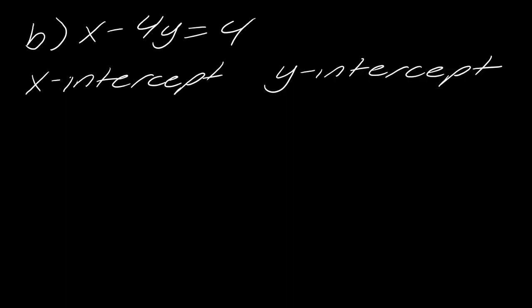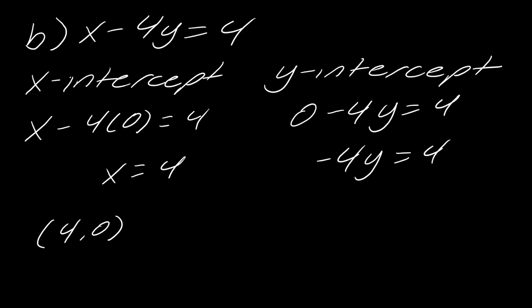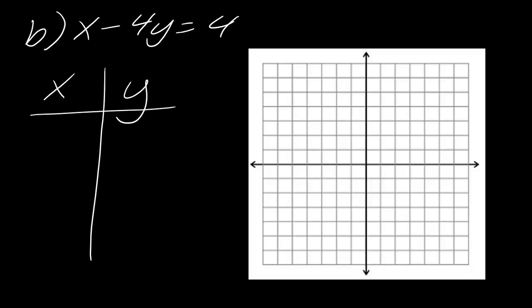Let's pivot to the next example. Once again, we're going to find the x and y-intercept. For finding the x-intercept, we want to set the y equal to zero. Putting in zero for y makes this nice and simple — it's just x equals 4, nothing else to solve. So the x-intercept is the point (4, 0). For the y-intercept, I plug in zero for x: zero minus 4y equals 4, so negative 4y equals 4, divide both sides by negative 4 to get y equals negative 1. So the y-intercept is (0, negative 1).